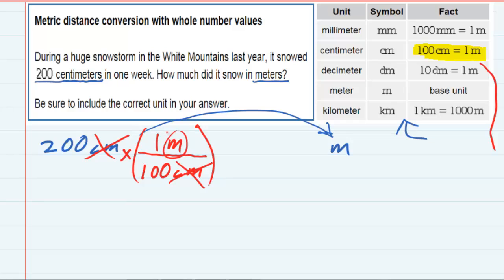So if I multiply the top, 200 times 1 gives me 200. Of course, the meters are still there. In the bottom I still have the 100, and the centimeters have been cancelled.